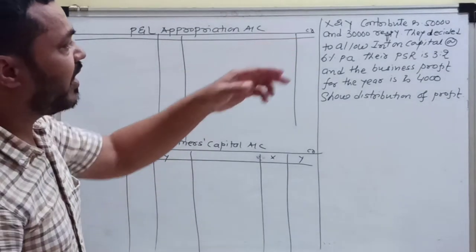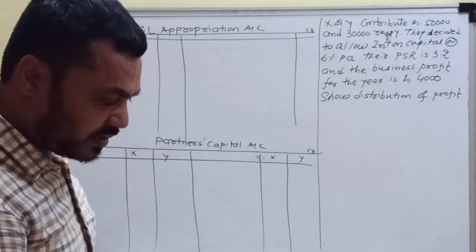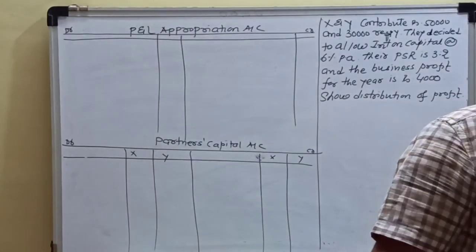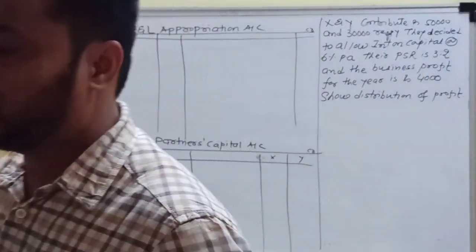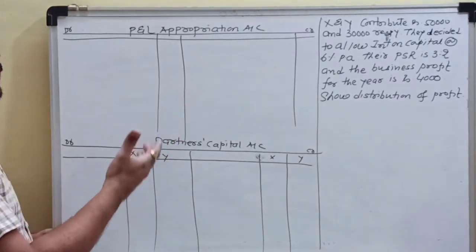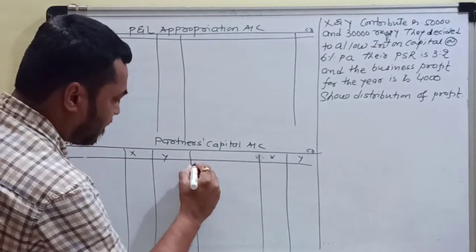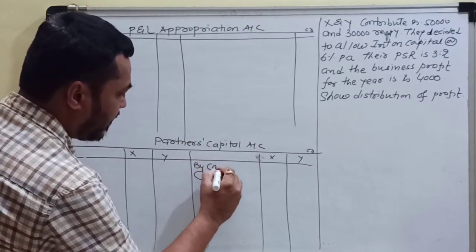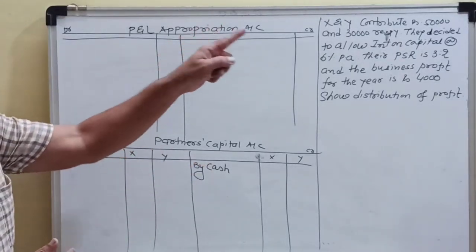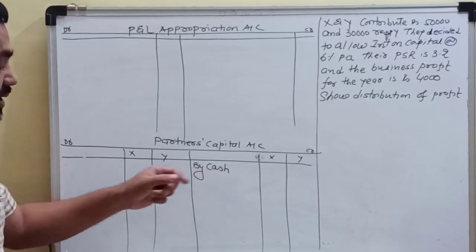X and Y contribute 50,000 and 30,000 respectively. The journal entry for this would be: Cash Account debit, to X's Capital Account, to Y's Capital Account — because X and Y are the amount givers and owners of this partnership firm. We write 'by cash' here because they contribute 50,000 and 30,000 at this particular time.